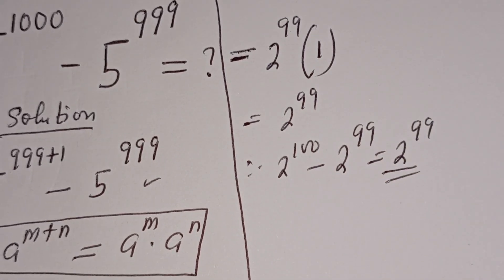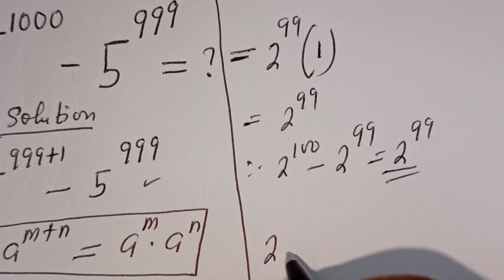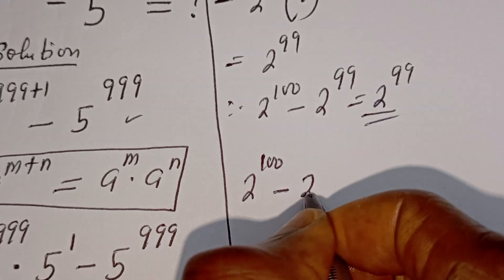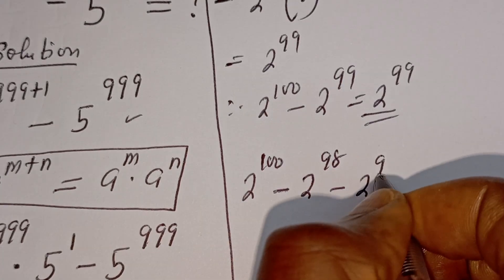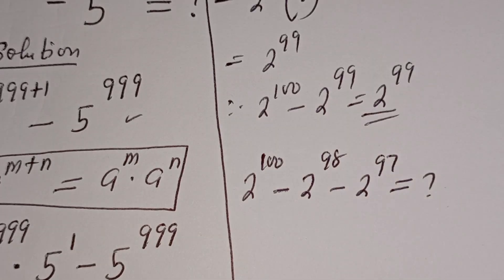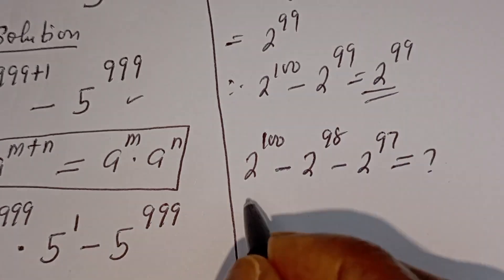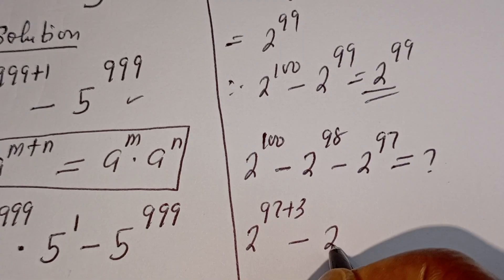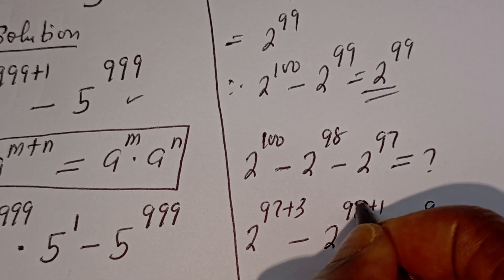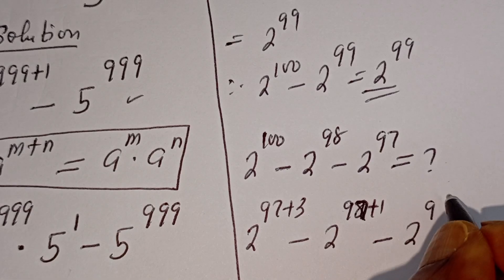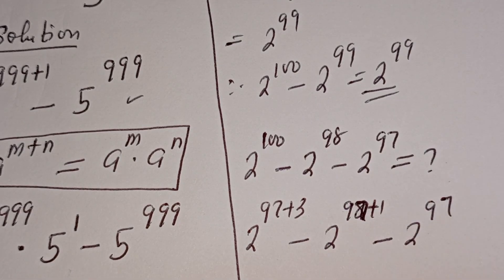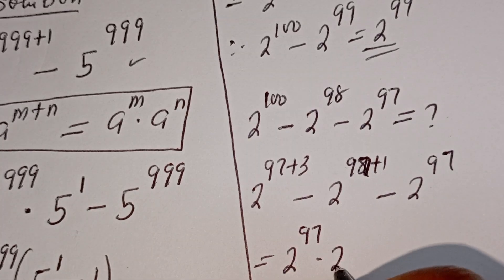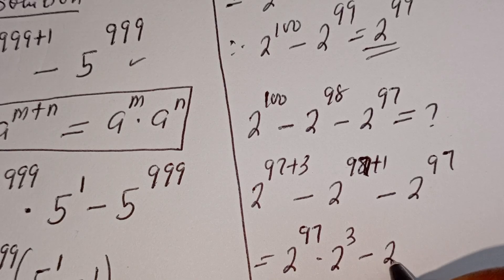Now let's try this again. If you have 2 to the power of 100 minus 2 to the power of 98 minus 2 to the power of 97, what is the answer? This can be written as 2 to the power of 97 plus 3, minus 2 to the power of 97 plus 1, minus 2 to the power of 97. Then this is equal to 2 to the power of 97 multiplied by 2 to the power of 3, minus 2 to the power of 97.